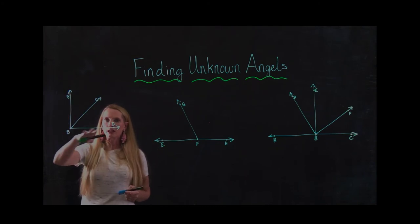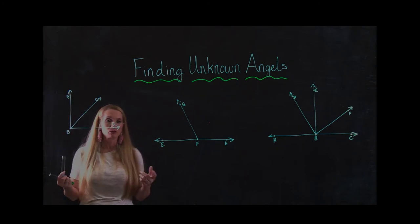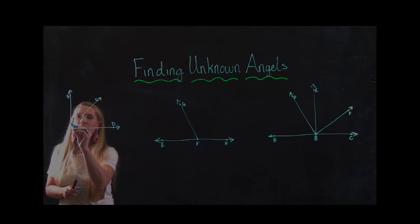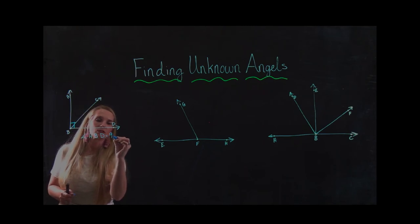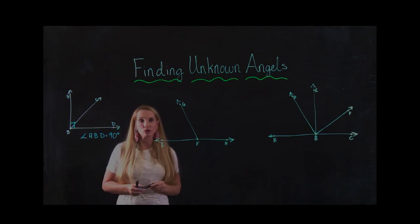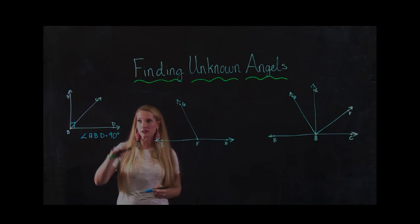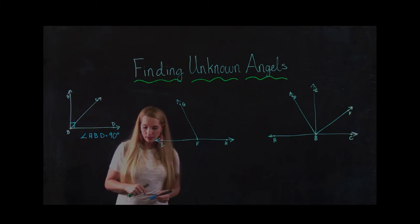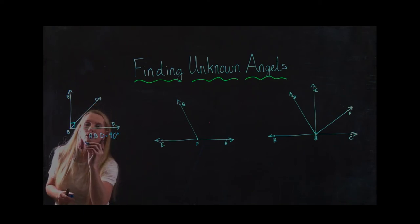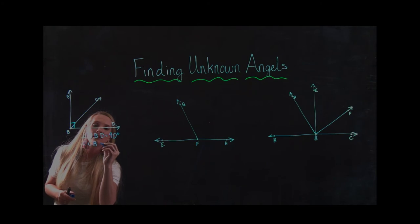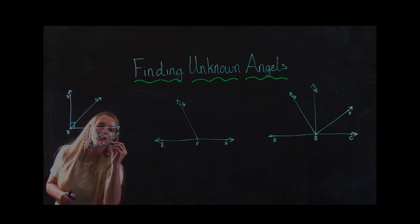We've got angle ABD. What can I tell right off the bat? Well, right off the bat, I can tell that ABD is probably a 90 degree angle. So I know that angle ABD probably equals 90 degrees. I don't have a protractor to actually put it on there, but I can tell that it's pretty close to a right angle. And they've given me that CBD, so angle CBD is equal to 60.